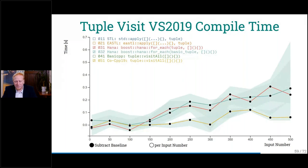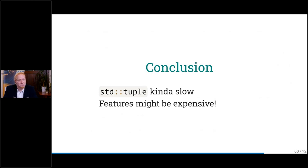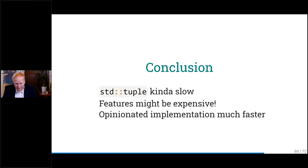Time for a conclusion: the standard tuple seems kind of slow depending on your compiler and platform. Extra features like offset calculations come with a price — they're not cheap. If you need them, you want to pay the price; if you don't need them, then maybe you don't want to pay that compile time cost. An opinionated implementation might be really fast, as I showed in my version. I can show the implementation details in IDE after the talk — I didn't prepare slides for that because it doesn't fit on a slide, but it's not much code.